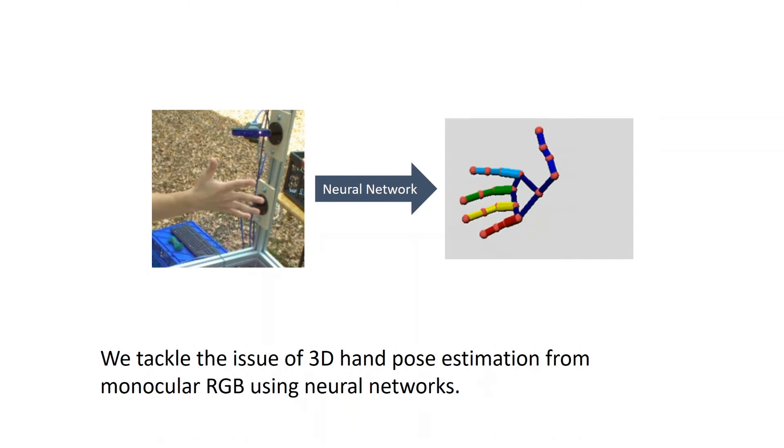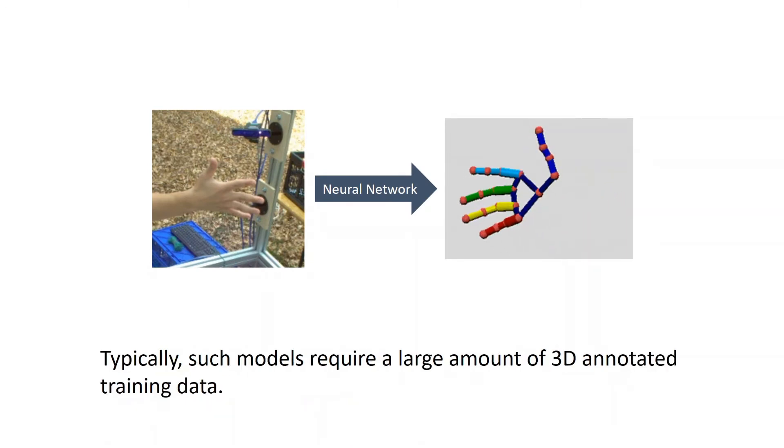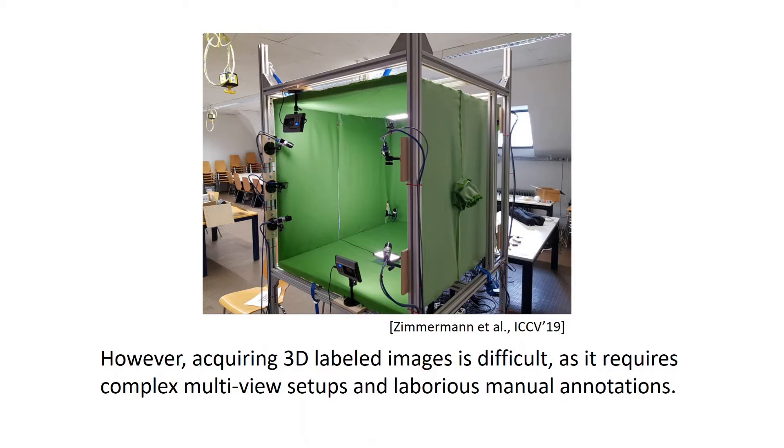We tackle the issue of 3D hand pose estimation from monocular RGB using neural networks. Typically, such models require a large amount of 3D annotated training data. However, acquiring 3D labeled images is difficult, as it requires complex multi-view setups and laborious manual annotations.